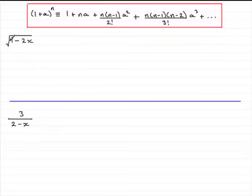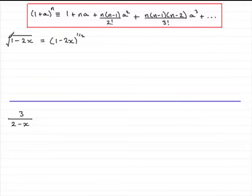For the first one, when we have the square root of 1 minus 2x, we need to express this as a power. We can write this as 1 minus 2x to the power of a half. If it were the cube root, it would be to the power of a third, and so on. Here a corresponds to minus 2x and n is a half — what we call a rational power.